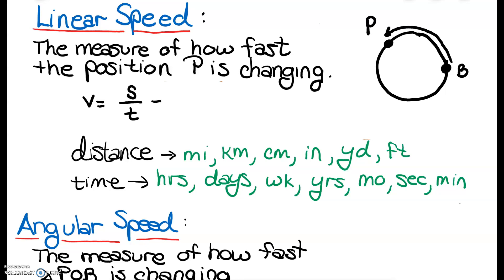We can come up with another formula because we do know how to calculate arc length in terms of the radius of a circle. So let's draw our radius and the angle in radians. Our arc length is measured by R times theta, and that theta is measured in radians, over the time that it took that point to travel that arc length.